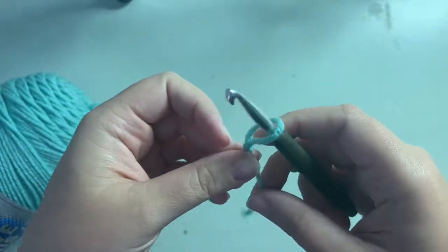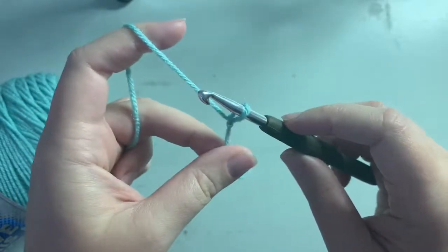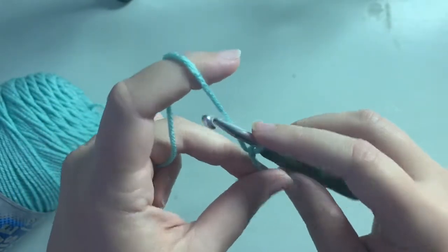Now we're gonna put that onto our hook, kind of snug it up to the hook. You don't want it too tight - you want it to be able to move on your hook so that way you have loose enough stitches.